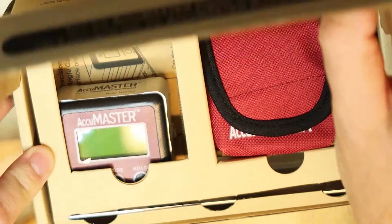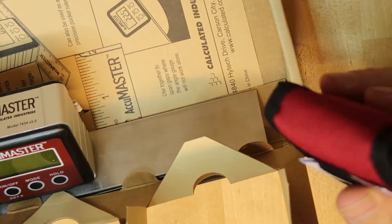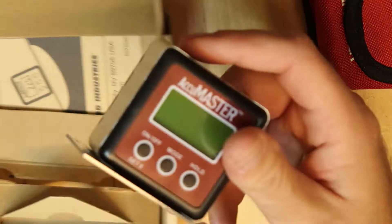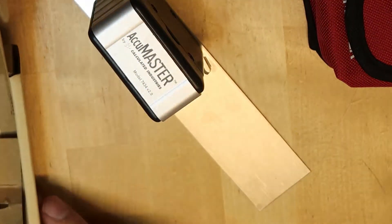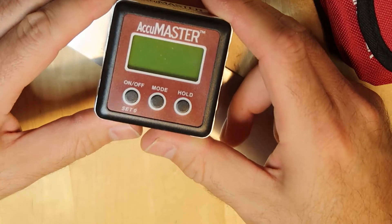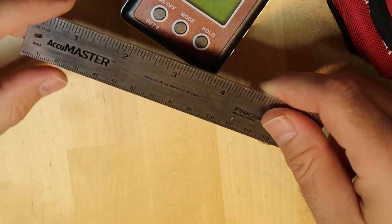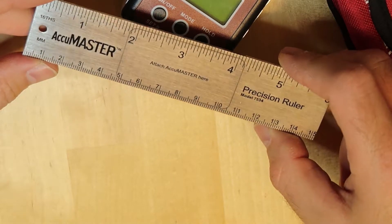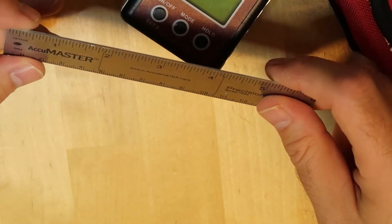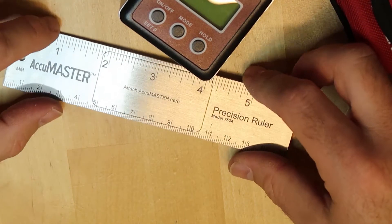So we have a nice bag and the AccuMASTER itself. By the way, this is magnetic, so it has arrived with a precision ruler. What you need to do is basically put this part where you want to hang something and put the AccuMASTER with it.